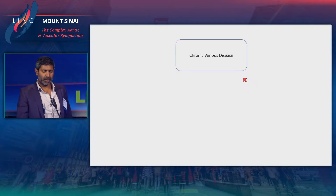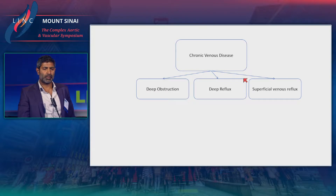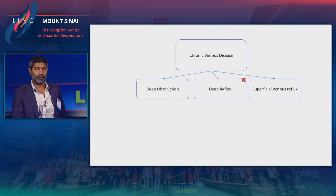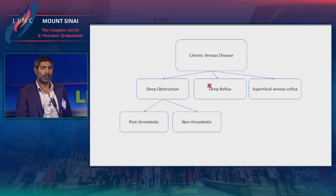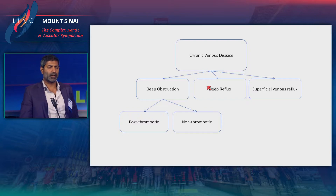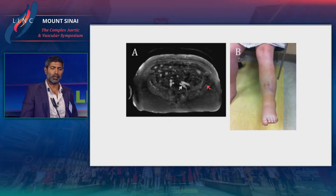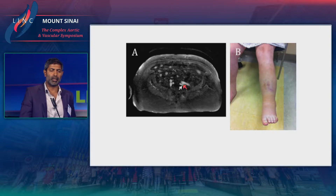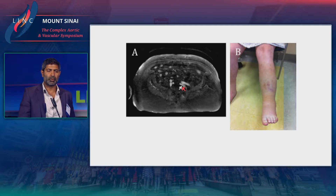When we talk about chronic venous disease, we're talking about deep obstruction, deep reflux, and superficial venous reflux. It's important to note that deep obstruction is actually the least common reason for chronic venous disease of these three. But if we take that subset of patients, they can be divided into the post-thrombotic group and the non-thrombotic group. This is an example of a non-thrombotic venous compression. Here you can see the bifurcation of the common iliac artery into the external and the internal. This is actually the external iliac vein, being sandwiched between the vertebral body and the internal iliac artery — that's your compression. It's not the classic May-Thirner.